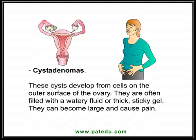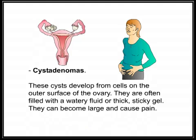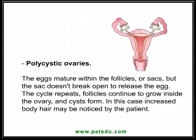Cystadenomas develop from cells on the outer surface of the ovary. They are often filled with a watery fluid or thick, sticky gel, and they can become large and cause pain.